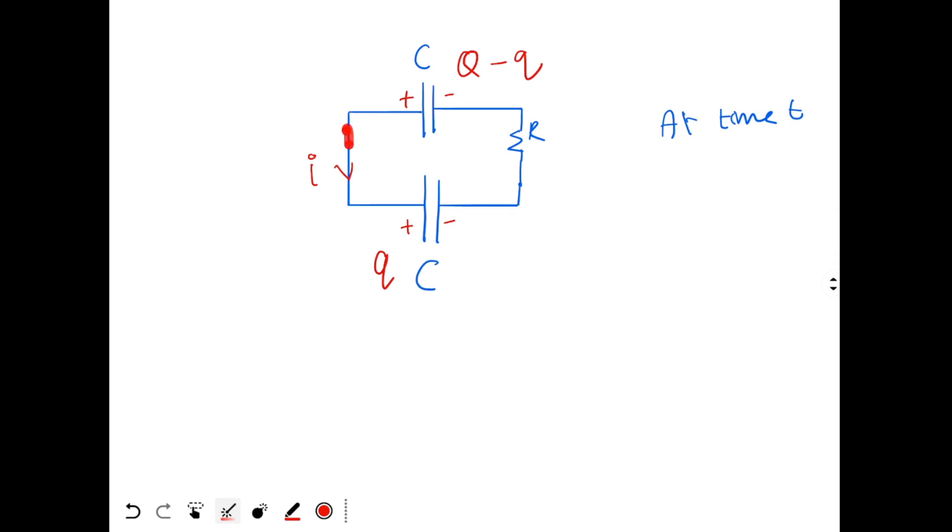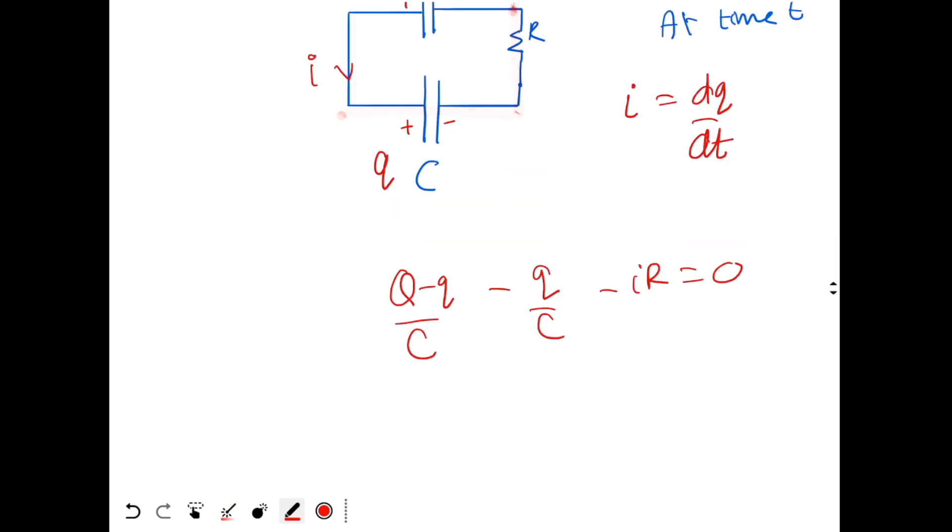Now here the current I is flowing into the positively charged plate. So I can say that I will be dQ by dt. Now for this loop, I apply Kirchhoff's voltage law. So I start from here. For this capacitor, I get Q minus Q by C. Then for this capacitor, I get minus Q by C. Finally, minus IR is equal to 0.